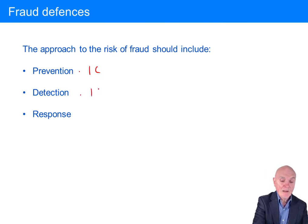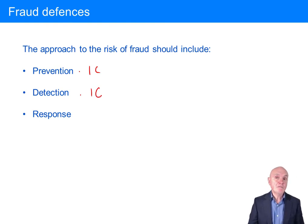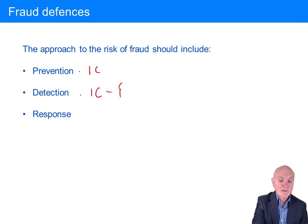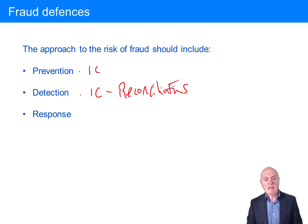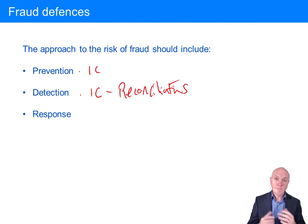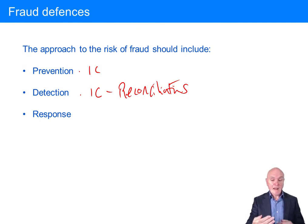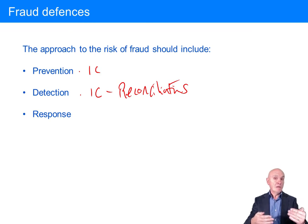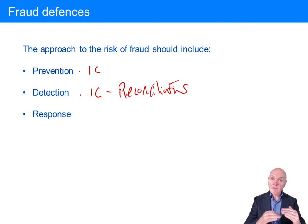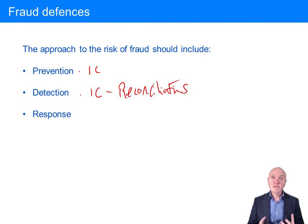Detection: a robust system of internal control will also detect fraud or error. For example, reconciliations — if fraud is being carried out through a bank account, every month you get a bank statement and should compare it to your cash account. If your cash account shows $10,000 but the bank statement shows only $2,000, and you can't find a timing difference to explain it, then one reason is that $8,000 has been fraudulently taken.